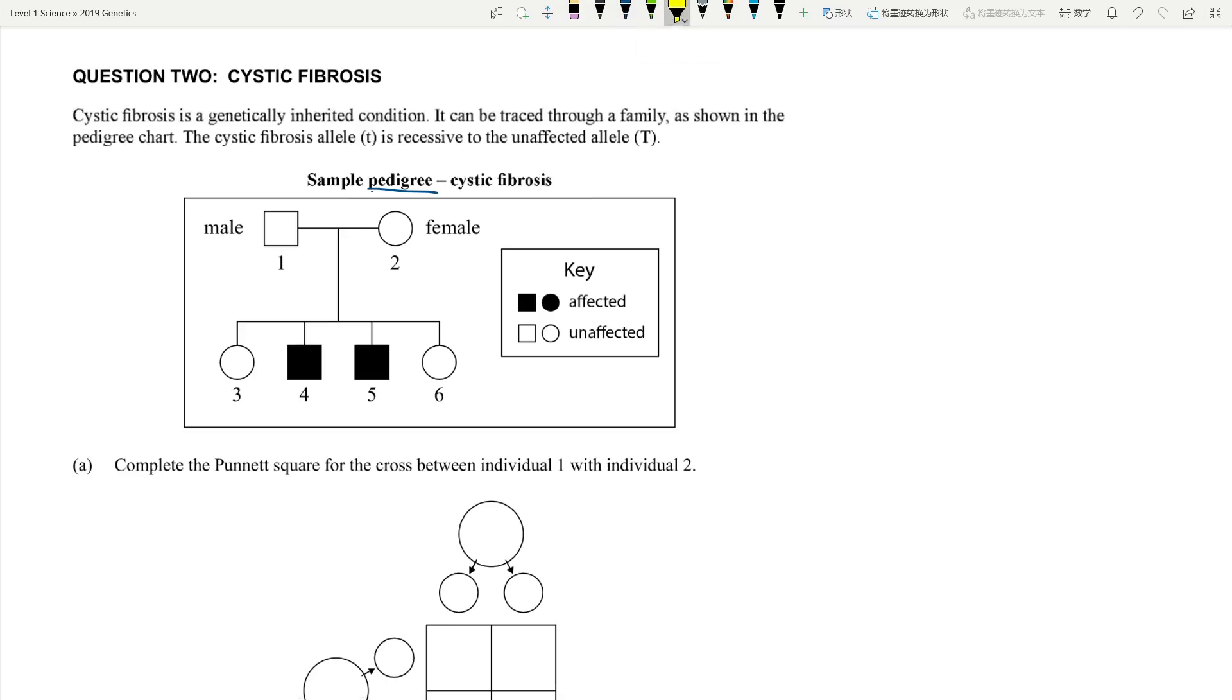So we've got cystic fibrosis, you can trace through the family as you can see in the pedigree chart. The cystic fibrosis allele which is a small t is recessive and then a normal person has capital T. When I do these type of questions when I teach this to my class, I don't even read the question. I normally just try to solve all of the genotypes of every single individual on the pedigree chart because if you can do that, the rest of the questions is a walk in the park.